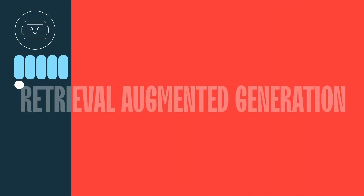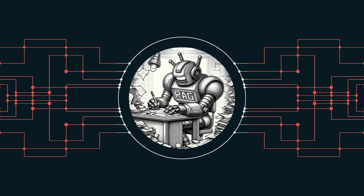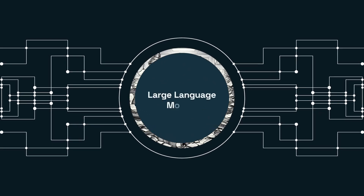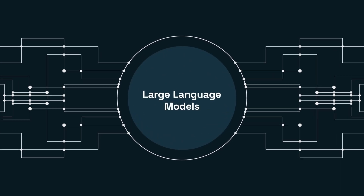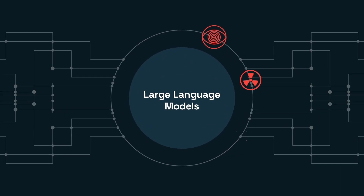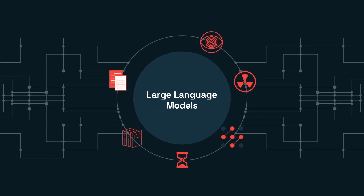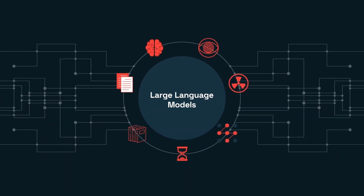In closing, Retrieval Augmented Generation, or RAG, represents a sophisticated pipeline of processes that elevate the capabilities of large language models by infusing them with up-to-date, curated, and highly relevant contextual information from external sources.